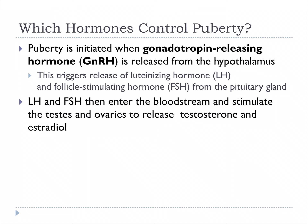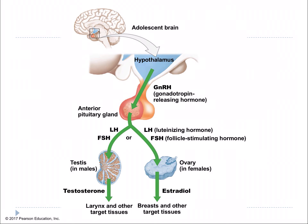Secondary sex characteristics include increased hair in males, deepening of the voice, and in females, development of breasts and start of menstruation. The hypothalamus produces GnRH, triggering the anterior pituitary to release luteinizing hormone and follicle-stimulating hormone, which triggers the testes in males to enact all the puberty features, and in females the same two hormones act on the ovary to release estradiol and trigger all the changes that take place.